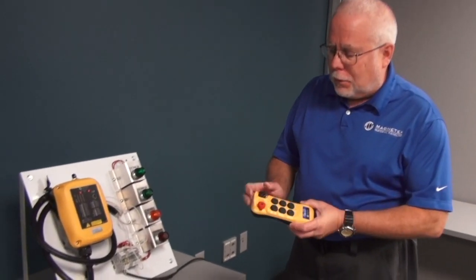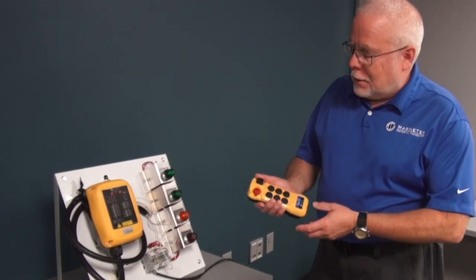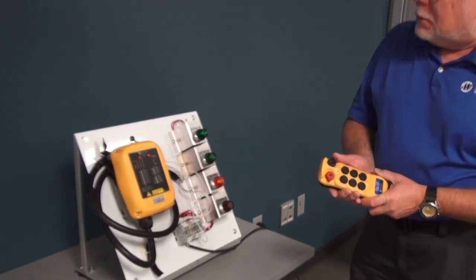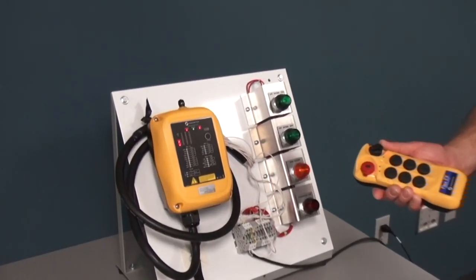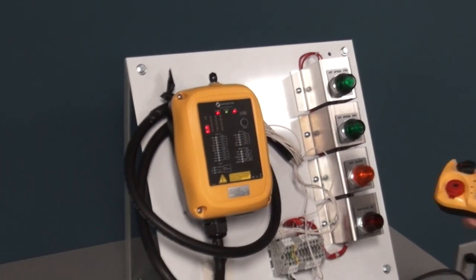To reactivate the mainline, I have to go through the start sequence on the transmitter and pull it in. And I'm good to go.